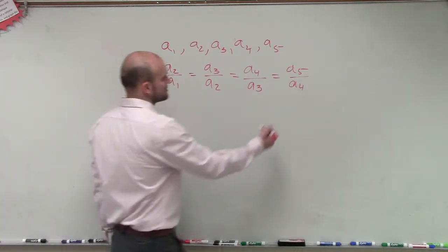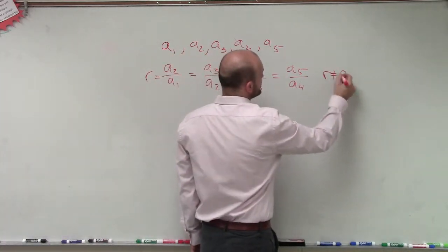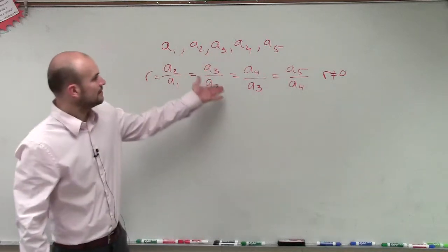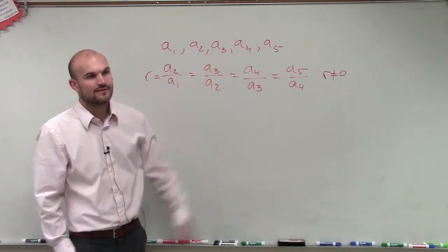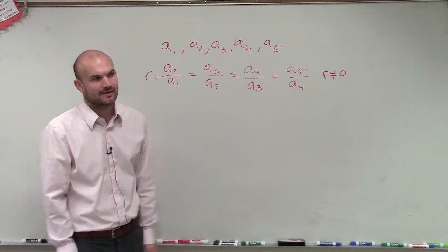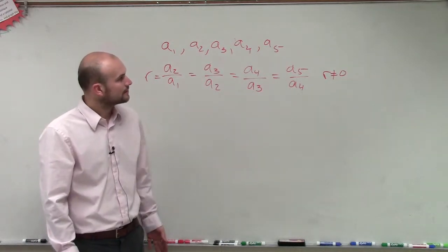And obviously, we could also say that r cannot equal 0. If you had r equal 0, then obviously, you wouldn't have your constant ratios. You wouldn't have a sequence go through. OK?